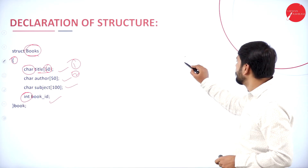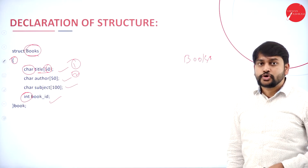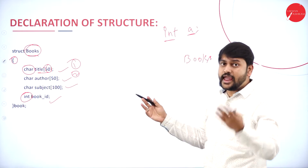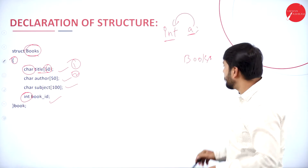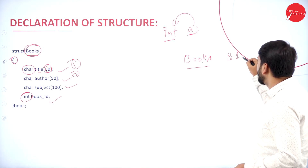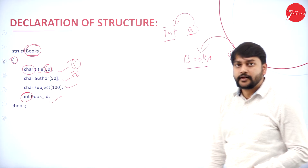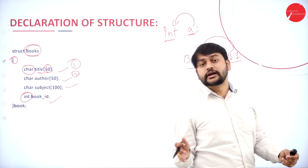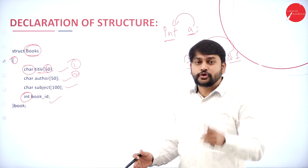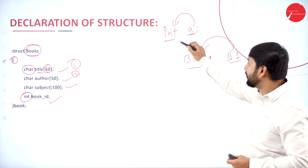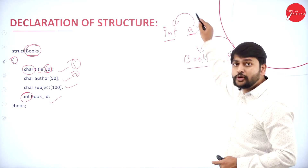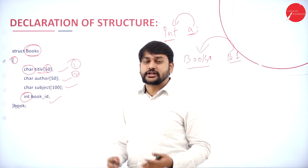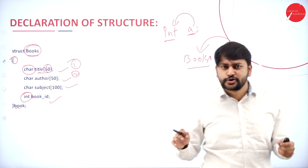You should treat 'books' as one data type — a user-defined data type. Just as 'int' is a predefined data type and 'a' is a variable of type int, when you write 'struct books b1', then b1 is a variable of type books. Similarly, 'book' declared here is a variable of type books. That's the key concept to understand.